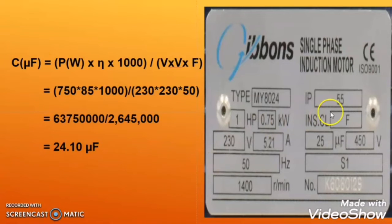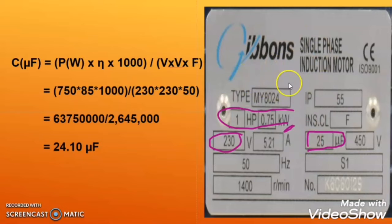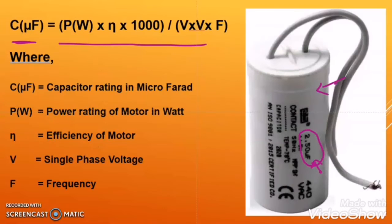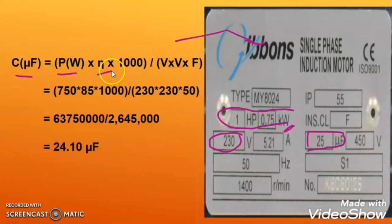Now let us take another example. Here you can see the motor rating is given as 1 HP or 0.75 kilowatt, and the voltage is given as 230 volts. The microfarad value is also given on this motor's nameplate — this induction motor requires 24 microfarad. But let us calculate using the formula to verify: C = P × efficiency × 1000 ÷ (V² × f).